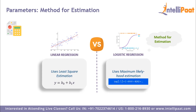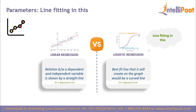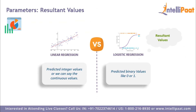The third parameter is line fitting. In linear regression, the best fit is always a straight line on the graph, commonly known as the regression line. In logistic regression, while establishing the relationship between dependent and independent variables, the best fit line is a curved line commonly known as the sigmoid curve. For resultant values, linear regression gives continuous predicted integer values, while logistic regression gives binary predicted values of zero or one, always revolving between zero and one.